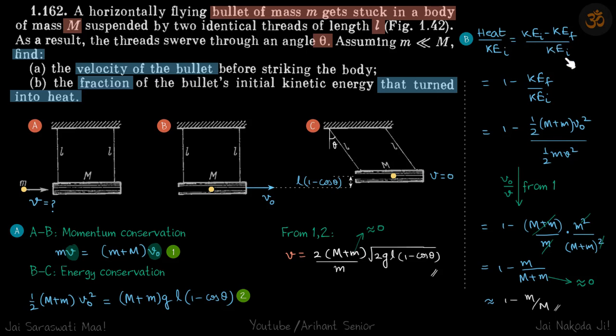Upon KE_i, this becomes 1 - KE_f/KE_i. KE_f is 1/2(M+m)V_not² and KE_i is 1/2 MV². Now this ratio of V_not by V we can get directly from our first equation.